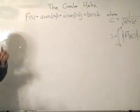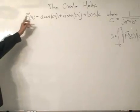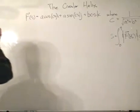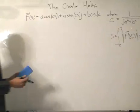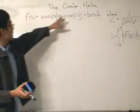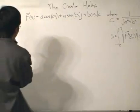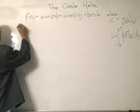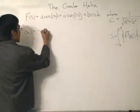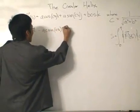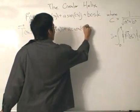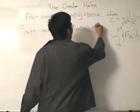Now we know that when we differentiate the position vector written in terms of arc length s, we immediately get the unit tangent vector. So the unit tangent vector T equals the first derivative of f with respect to s, which gives us: T = −a·c·sin(cs) i + a·c·cos(cs) j + b·c k.